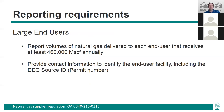You're required to report the volume of natural gas delivered to each end user that receives at least 460 million cubic feet of natural gas annually, and identifying information for these facilities. One small addition this year is we are also asking you to include the DEQ source ID, which is the same as the permit number for these facilities. DEQ will provide each of you with a list of facility source IDs based on your past reporting, and if the source ID isn't known you can also report it as unknown for the first time.